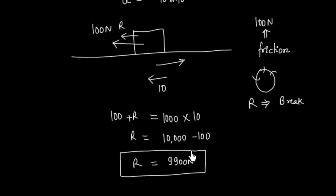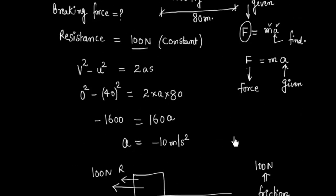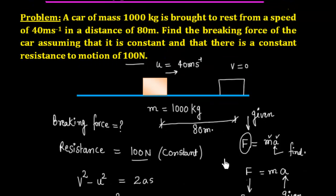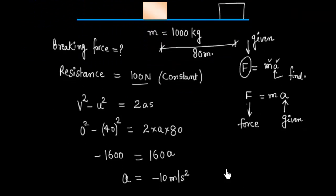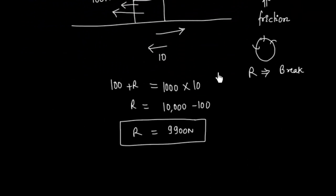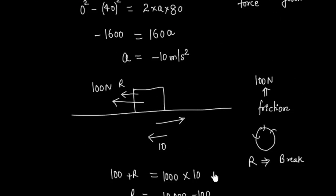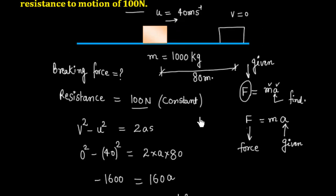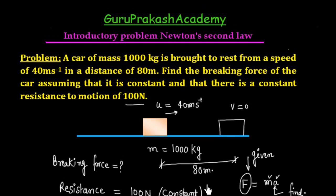So the braking force R = 9900 N is the force applied by the brake. In this problem, the acceleration was indirectly given through the kinematic data, and we worked backwards to find the force.